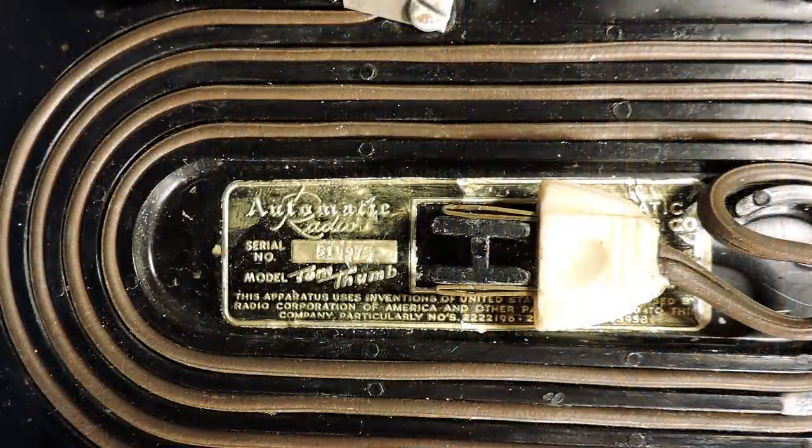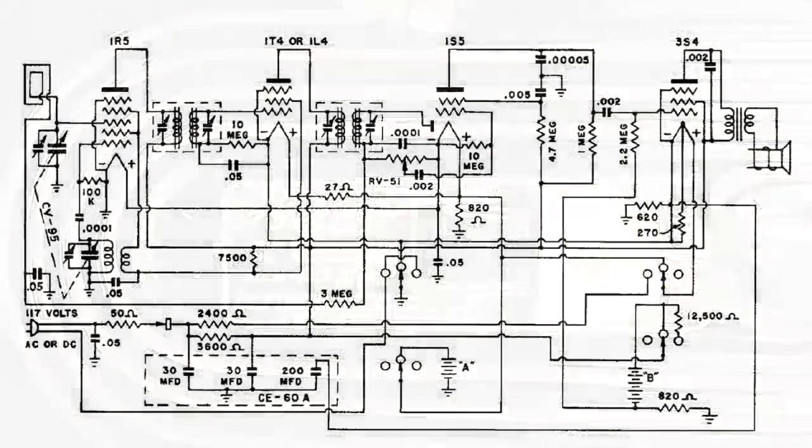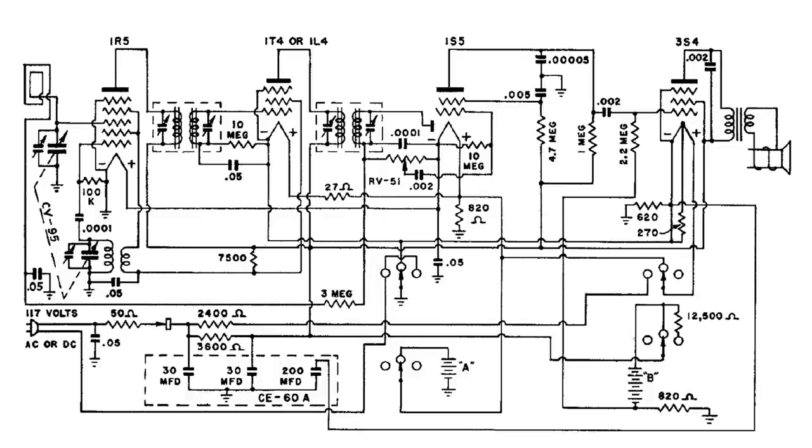And here is the model number of this radio, Tom Thumb. Here is a wiring diagram of a Tom Thumb. Now this isn't the exact wiring diagram of the model I have but it's very close. What I did was I went to the same manufacturer with the same tube lineup and this circuit is almost identical.